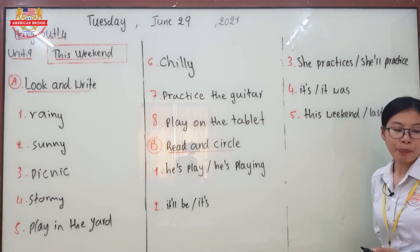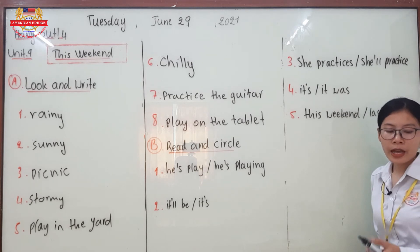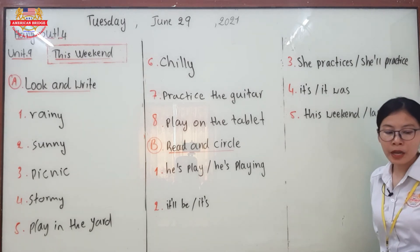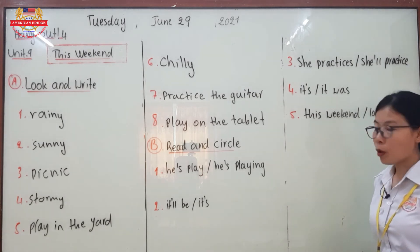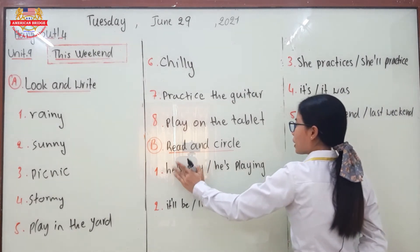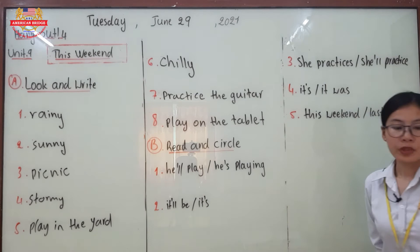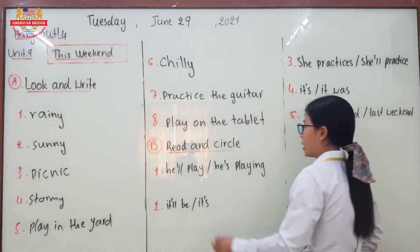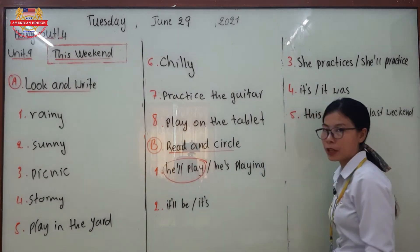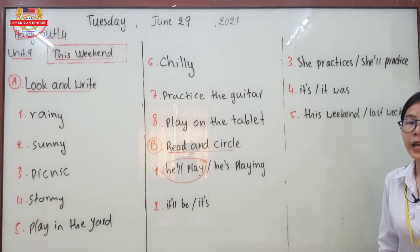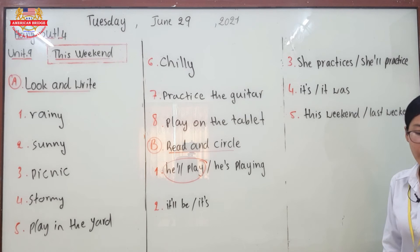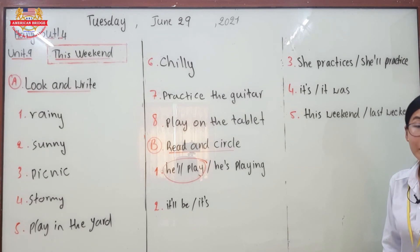Part B, number one: 'If it's chilly this weekend, he'll play or he's play in the yard.' After a present verb in a conditional, it should be the future form. So the correct answer is he'll play. He'll is the short form of he will.